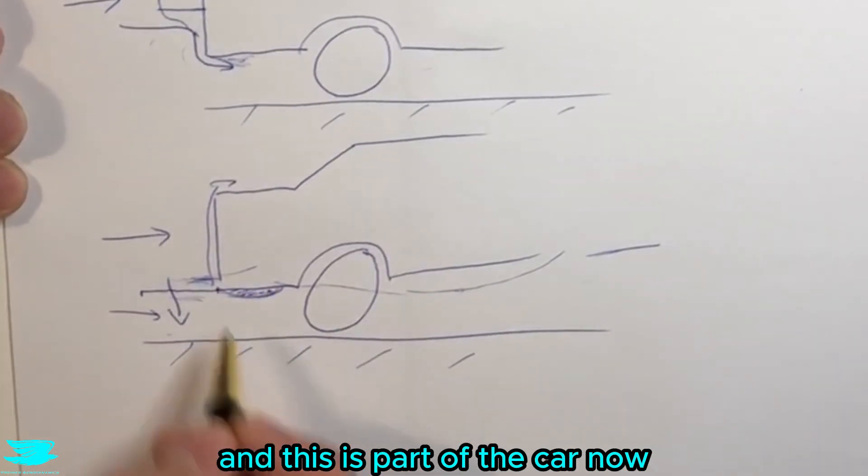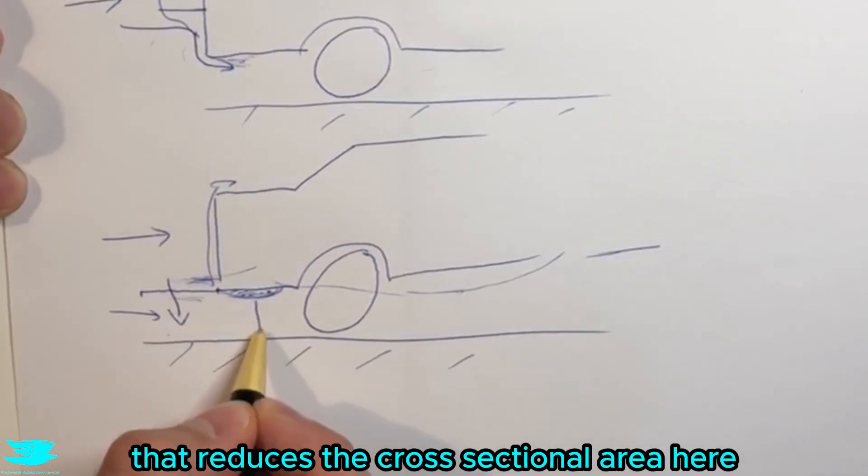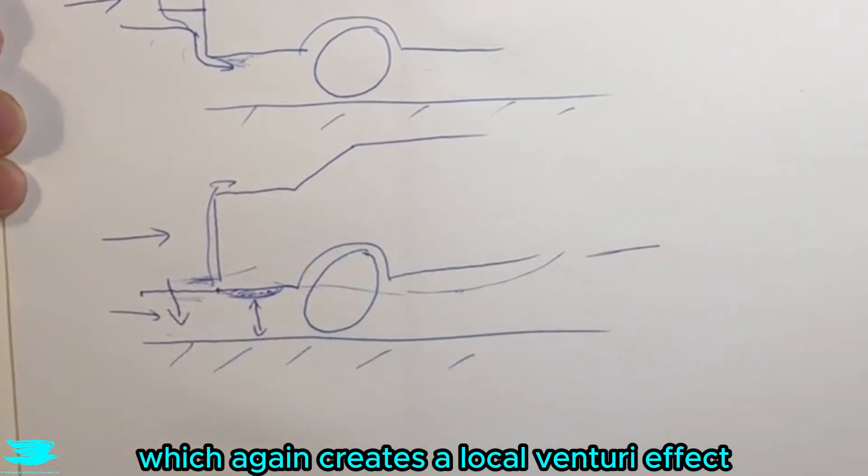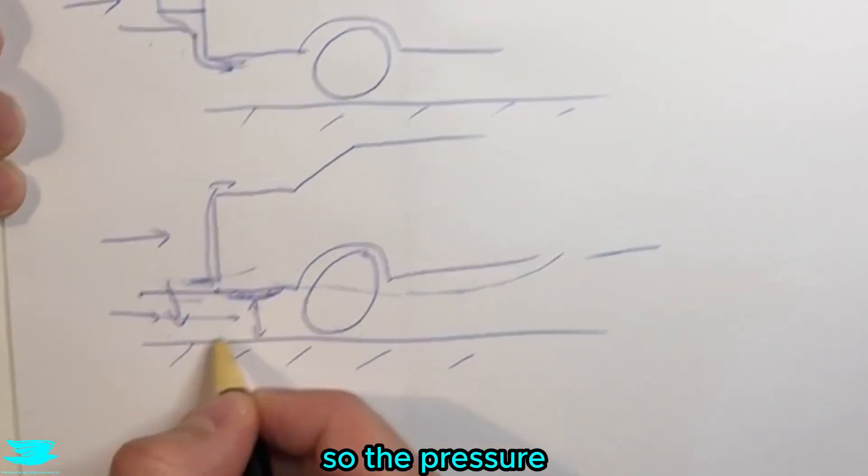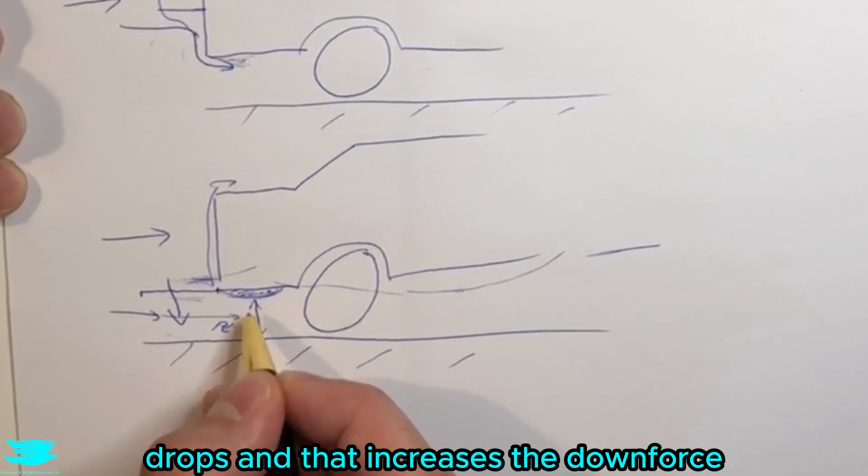And this is part of the canal, that reduces the cross-sectional area here, which again creates a local venturi effect. So the flow comes in, it has to speed up, so the pressure drops, and that increases the downforce.